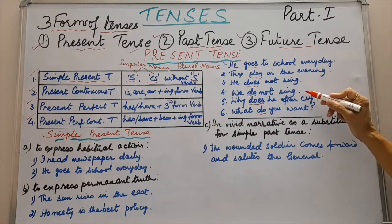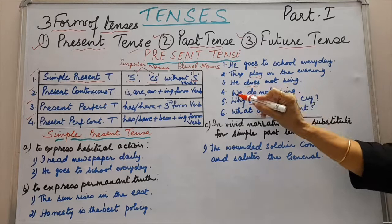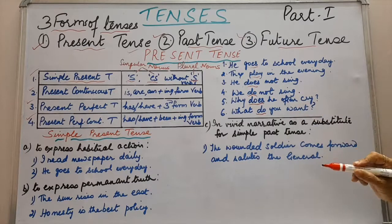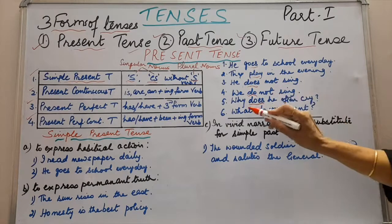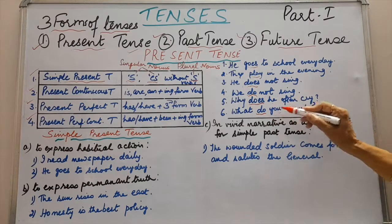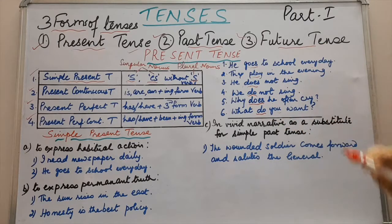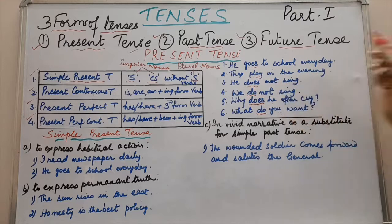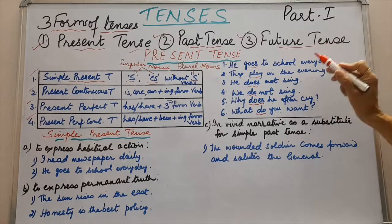You can make negative sentences also. He is singular — does not sing — so we have used es. We do not sing — we is plural, so we have used without s. You can even make interrogative sentences. Why does he often cry? He is singular, so we have used es. What do you want? With you we use plural, so here we have used the plural without-s verb. Whenever a noun is singular, we use s and es verbs. Wherever it is plural, we do not use es verbs.